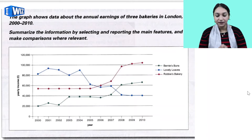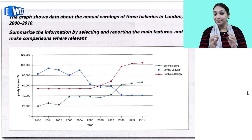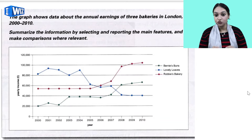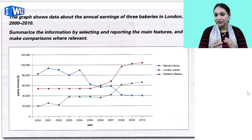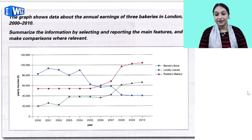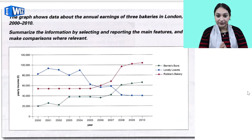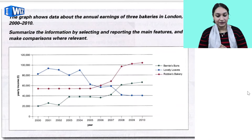You get to write 150 words in 20 minutes, and you have to make sure that you write only the most relevant information. Relevant information means the graph or visual representations have to be described in your words, answering the questions and achieving your tasks. When you do this well, you will get a good band score in Task 1 of the academic IELTS.